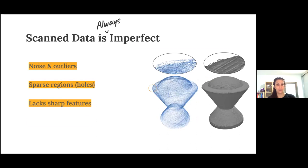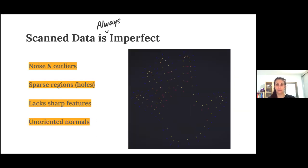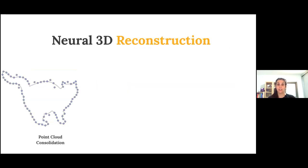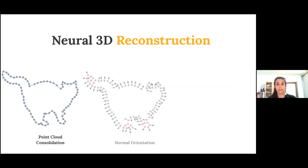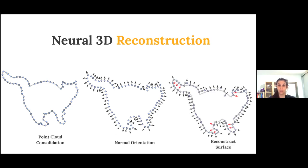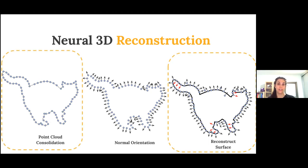And if the normals are unoriented, we must orient them as a prerequisite for surface reconstruction, among other things. Today I'm going to talk about three different neural reconstruction works. The first consolidates a noisy point cloud, which means removes noise and adds new points. Another learns to estimate a globally consistent normal orientation. And the other reconstructs the underlying surface directly from the noisy and imperfect scan input, and it can even handle unoriented normals.